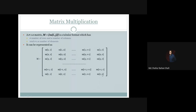A matrix is very much related to the two-dimensional array data structure in C programming. A two-dimensional array is very similar to a matrix. However, in C programming, the indexing of the first element starts from 0.